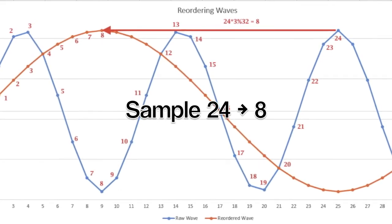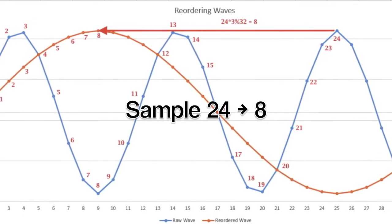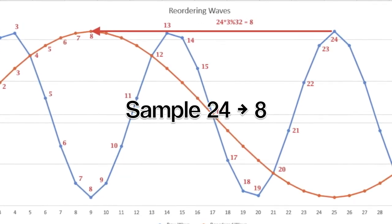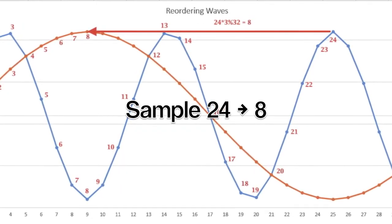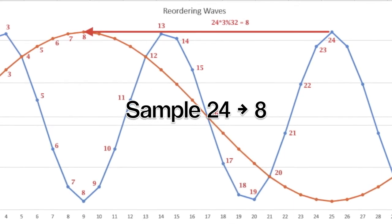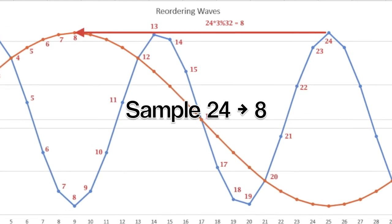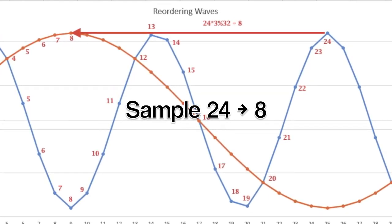We aren't going to do the whole wave, but let's fast forward to sample twenty-four, which is the positive peak. Twenty-four times three is seventy-two. And seventy-two modulo thirty-two is eight. So in this way the positive peak from the three cycle wave gets relocated to sample eight, where it belongs in the single cycle wave.